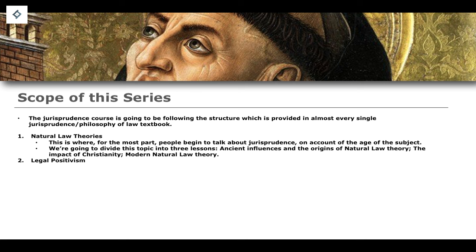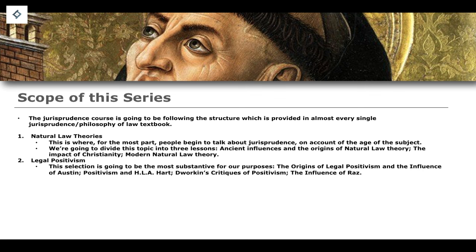We will then talk about arguably the most important jurisprudential theory — legal positivism. We'll cover the origins of legal positivism and the influence of philosophers such as Austin, critiques of Austinian legal positivism, and Austin's approaches to positivism. We will then talk about the influence of arguably the most important jurisprudential philosopher of all time — H.L.A. Hart and his approaches to legal positivism. Finally, we'll cover the critiques of legal positivism presented by Dworkin and then the influence of Joseph Raz on the legal positivist movement.